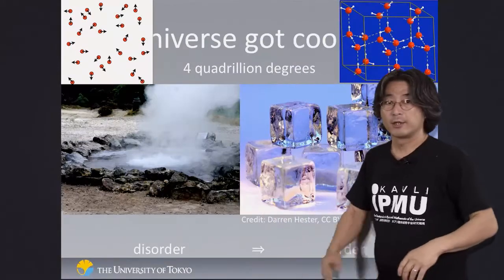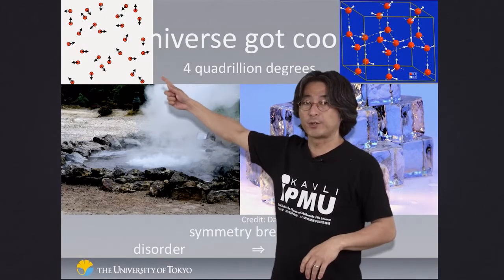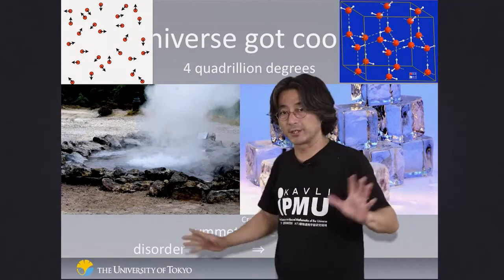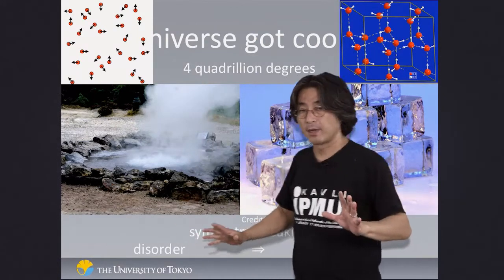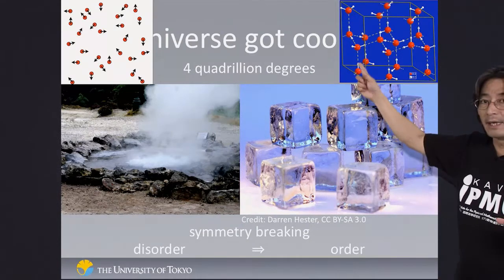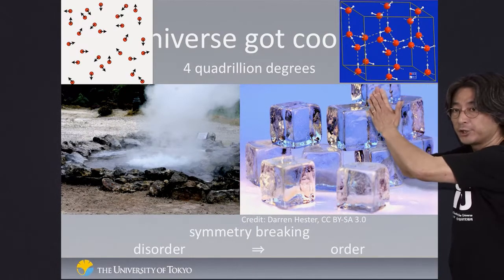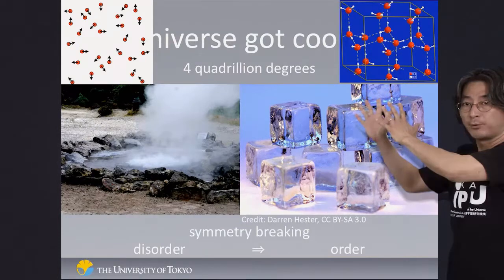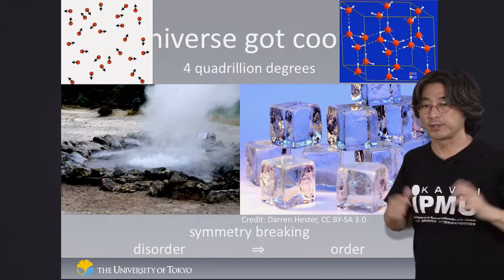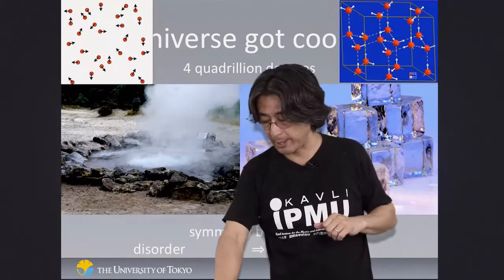Once you go from a disordered state — which actually has a high degree of symmetry, because everywhere is the same — to an ordered state, individual molecules specify very particular locations, so there is no symmetry anymore. You can't change your location randomly. This is the phenomenon called spontaneous symmetry breaking.